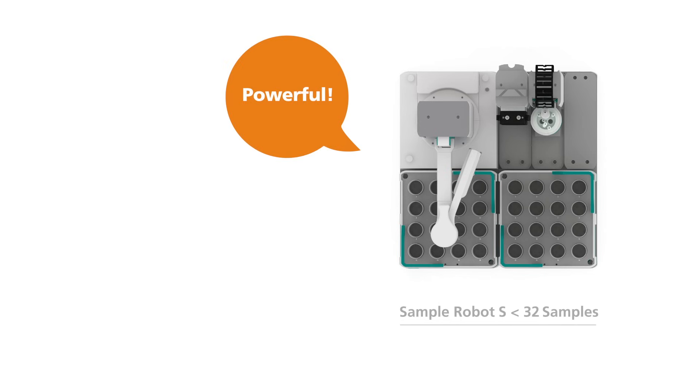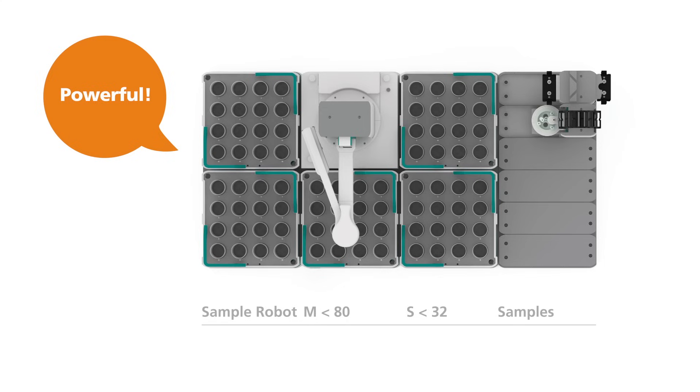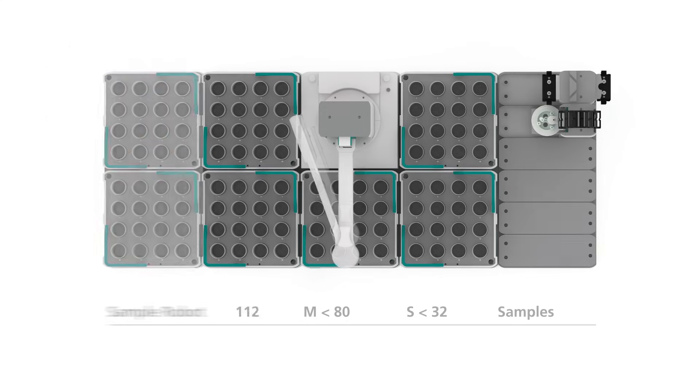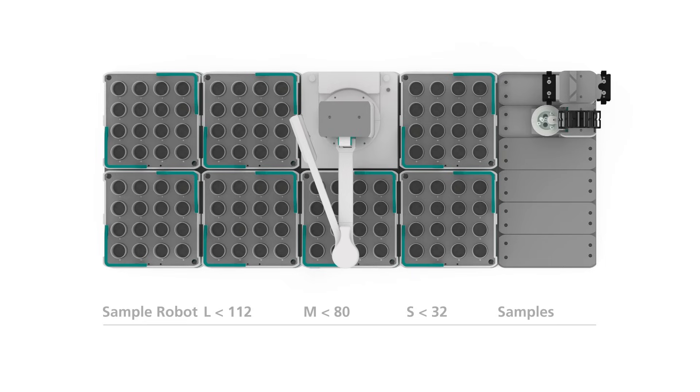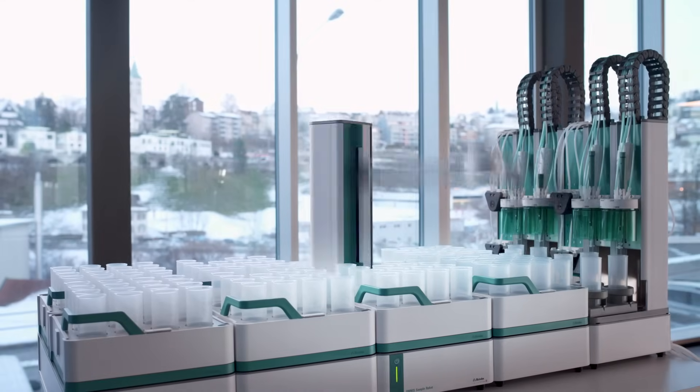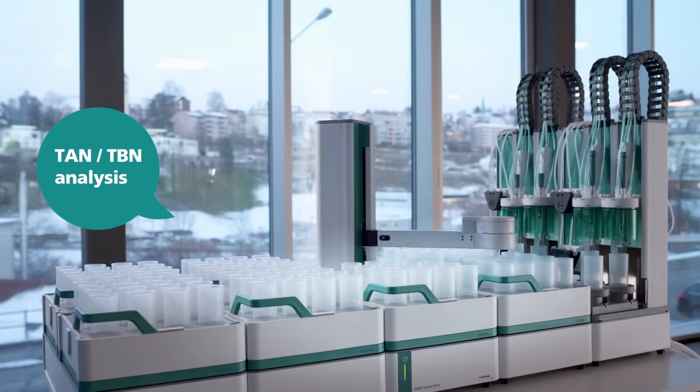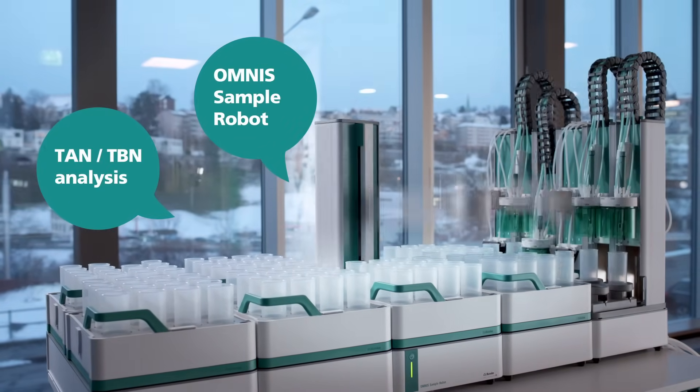Increasing sample loads? Simply upgrade the Omnis sample robot. With the Omnis sample robot L, you can determine TAN-TBN in up to 112 samples completely unattended.